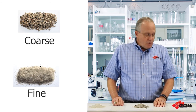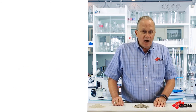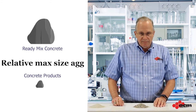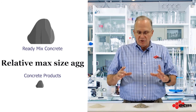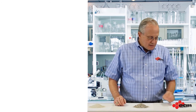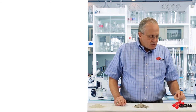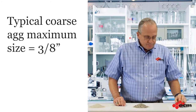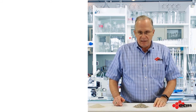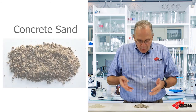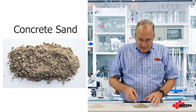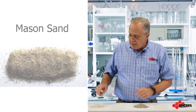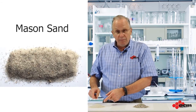In terms of coarse aggregate, the aggregates we use in our manufactured products are much smaller than those used in regular ready-mix concrete. That's because our products are smaller compared to a large poured-in-place slab. Our largest coarse aggregate is about three-eighths inch in size or smaller. As for sands, we can have a variety, all the way from a normal concrete sand with a variety of sizes including medium-sized particles and smaller, to something very fine like a mason sand or beach sand.